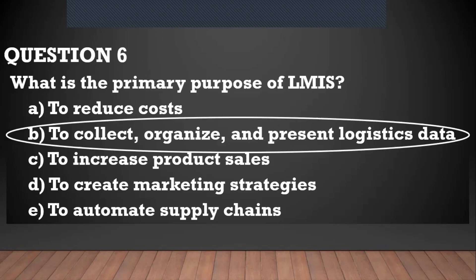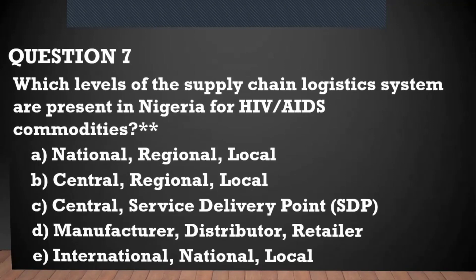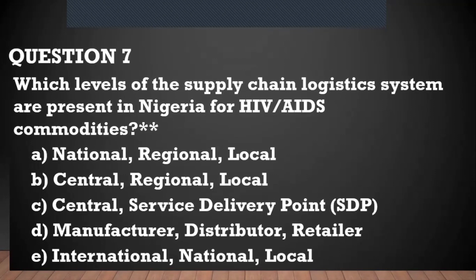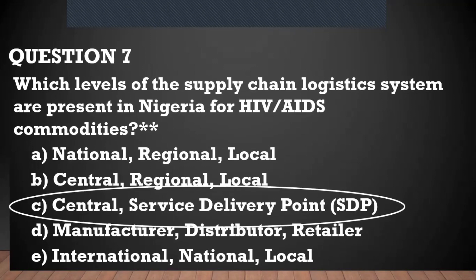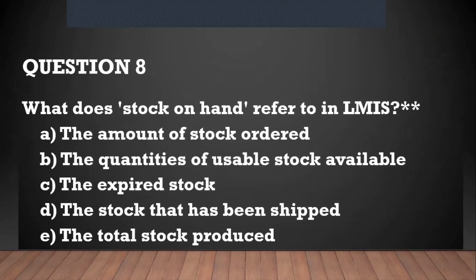Question number seven: which of the supply chain logistic systems are present in Nigeria for HIV/AIDS? For Nigeria, the HIV/AIDS logistic system is composed of two levels: the central level and the service point. This is to maximize the effect of that particular logistic system. Question number eight: what does stock on hand refer to in LMIS?